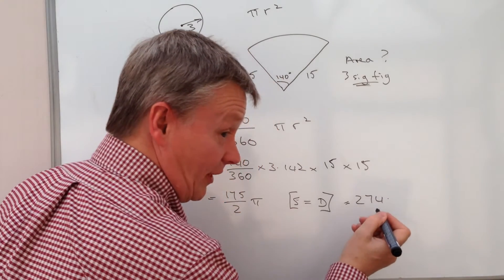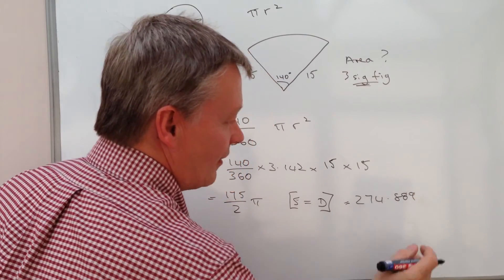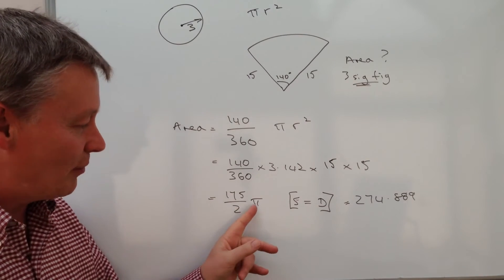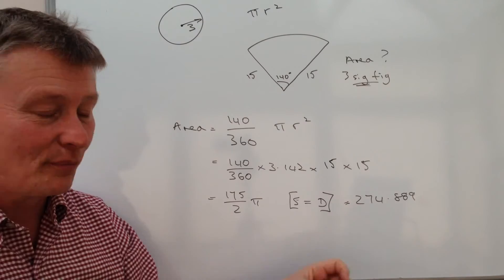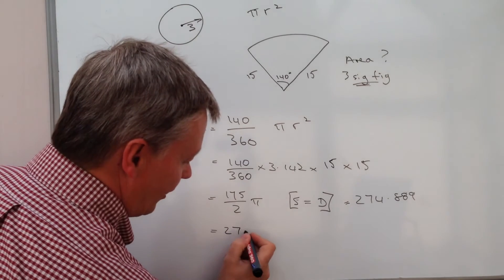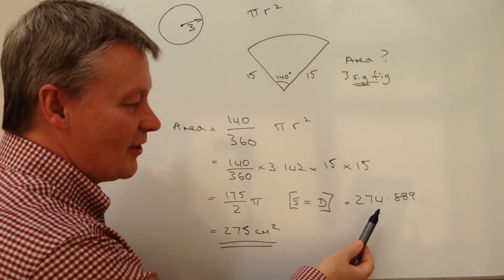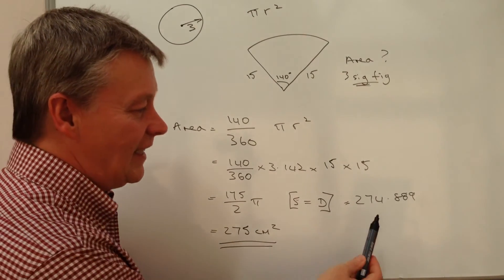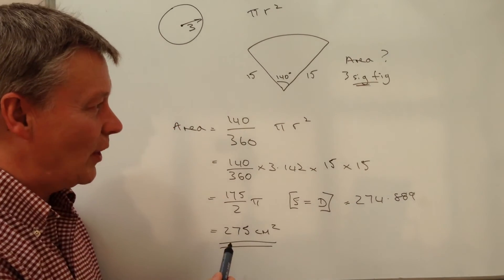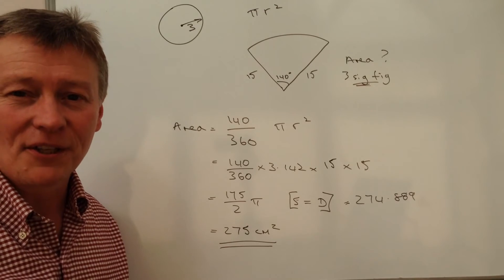It's 274.889 centimeters squared. So that's my calculator. Depending upon the value of pi that you've used, it might be slightly different. But essentially, to three significant figures, it's going to be 275 centimeters squared. Because what I do is I'll look at the third number, which is a 4. It needs to change because the fourth number is an 8, so this becomes 5. So the full answer to this question, the area of this sector of a circle is 275 centimeters squared.